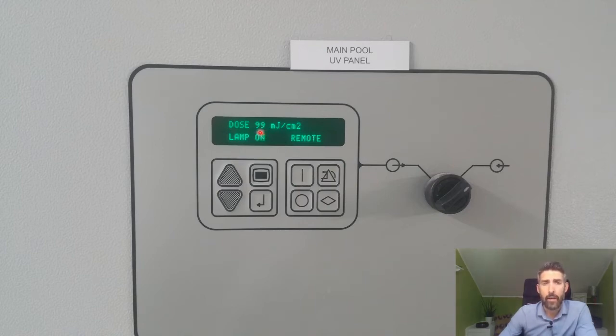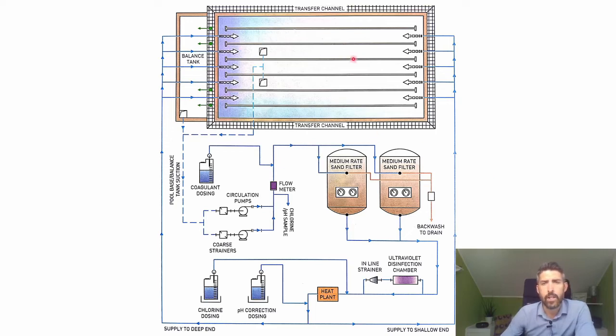Ultraviolet disinfection is referred to as a non-residual disinfectant, which is unlike chlorine, which is a residual disinfectant. With chlorine, when it's injected on the schematic here, the water goes back and circulates to the pool. You've got chlorine dissolved in this water, so there's always a residual of chlorine there. As the water exits the pool and circulates around the system, there's still chlorine in the water all the way along here.